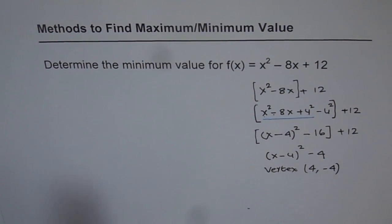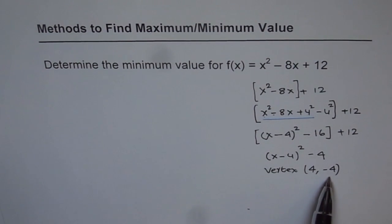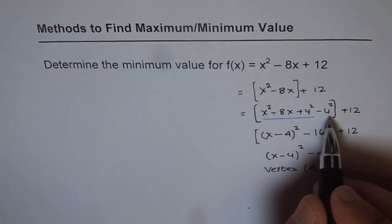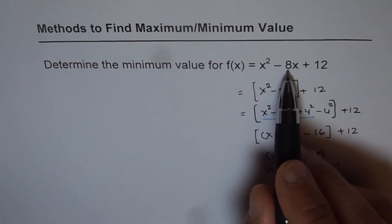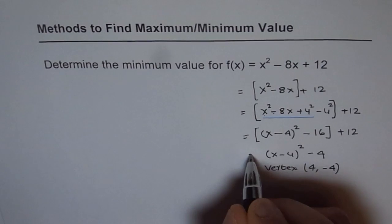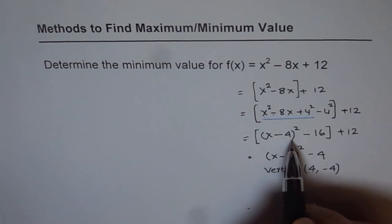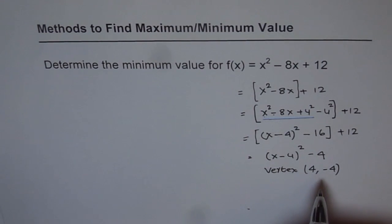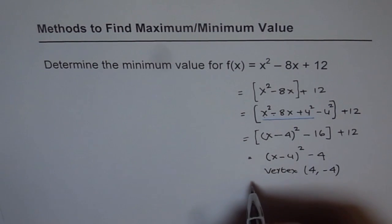The question was to determine the minimum value of the function. So the minimum value of the function is minus 4. What we did was we took our function and added and subtracted the square of half of b, the coefficient of x. That helped to make a perfect square, and then we had the equation in vertex form. This method is called completing the squares method.